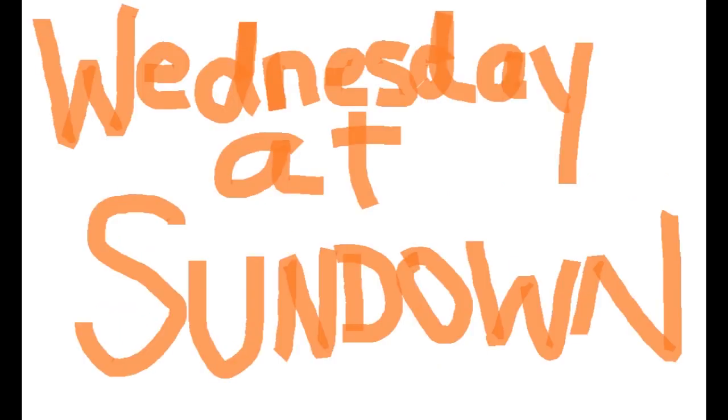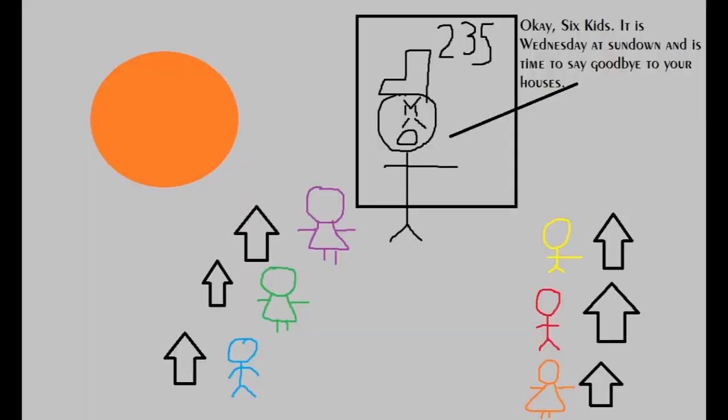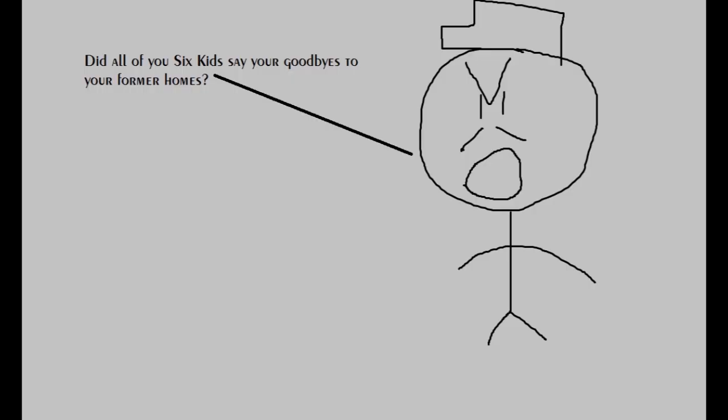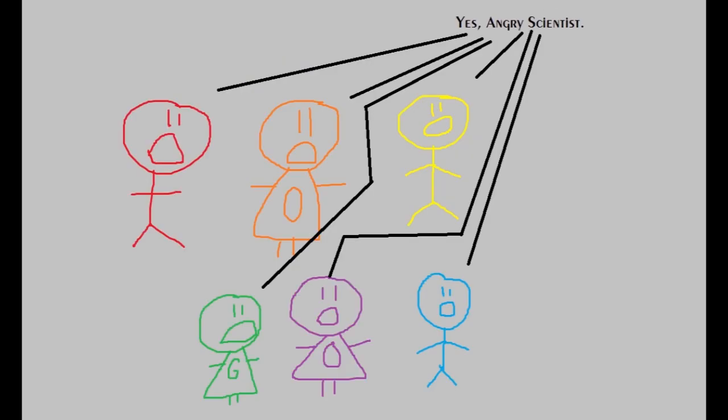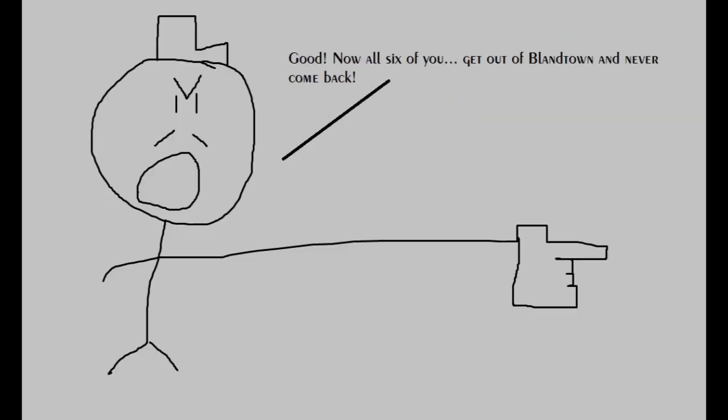Wednesday at sundown. Okay, six kids, it is Wednesday at sundown, and it's time to say goodbye to your houses. Six house goodbyes later. Did all of you six kids say your goodbyes to your former homes? Yes, angry scientist. Now all six of you, get out of Blandtown and never come back.